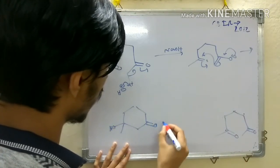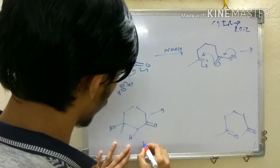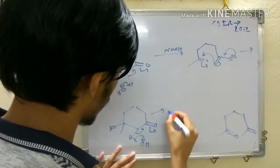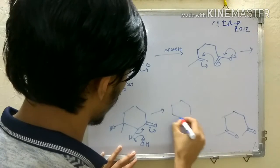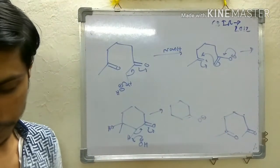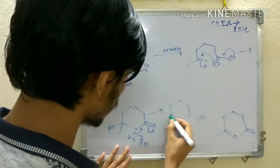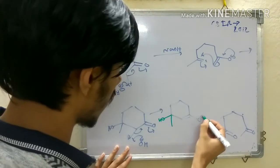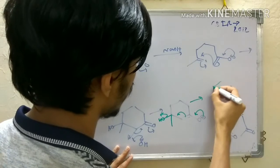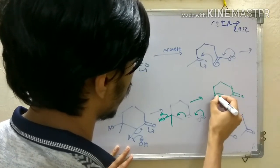Then your base can deprotonate this, so you get this enolate. When you push back, you're getting this.